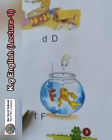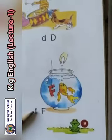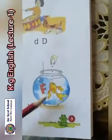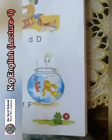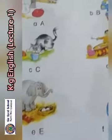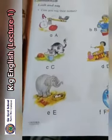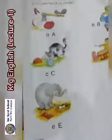The next letter is F. Capital F, small f. The sound of F is 'f'. F — fish. F — food. Repeat: F — fish. F — food. For the lecture, please contact the school official number. Thank you. Take care.